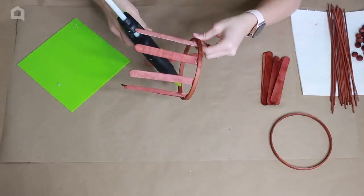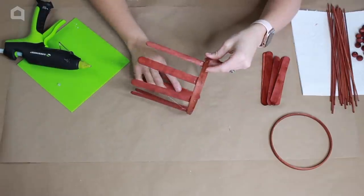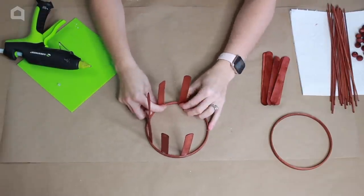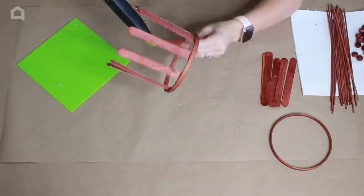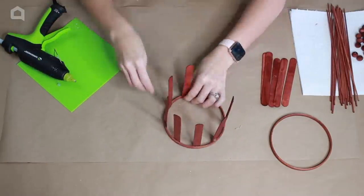We're going to evenly space these out around the inner circumference of our hoop. I want to eyeball where it's going to go next.